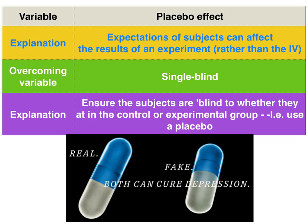Therefore, what we need to do to test the effectiveness of the painkiller is to use a single blind procedure, where we ensure that the subjects are blind as to whether they are in the control group — which is given a fake drug, a placebo (derived from the Latin word meaning 'shall please') and would serve as a baseline measure — or in the experimental group, which is actually exposed to the IV, i.e., they're given the real treatment.